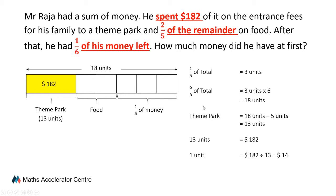Now we are ready to answer the question: how much money did he have at first? We know that his entire sum of money is equivalent to 18 units. Therefore, his total sum of money will be equal to $14 — the value of one unit — multiplied by 18, and this gives us a total of $252.